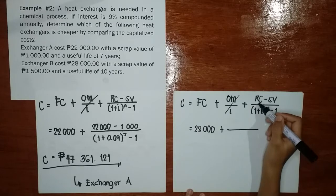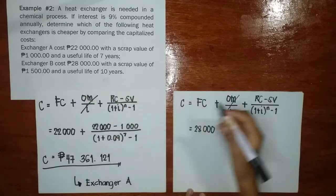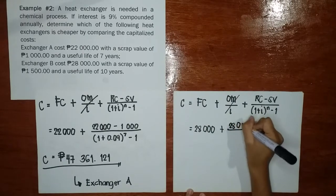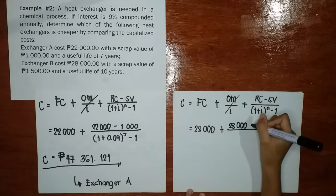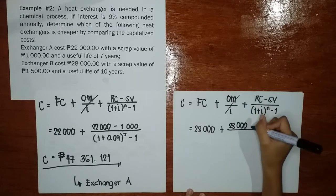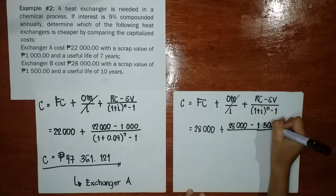So ilan si RC? Wala din direct na sinabi pero meron tayong 28,000. So gamitin natin siya. 28,000. Ilan ang ating salvage value or scrap value? So meron tayong 1,500.